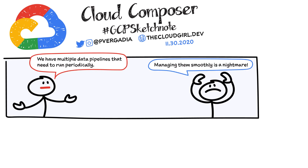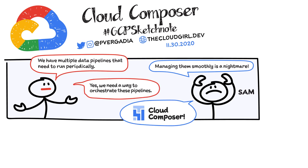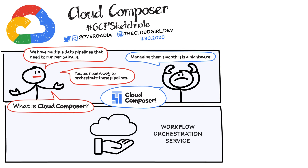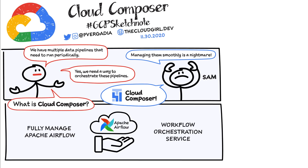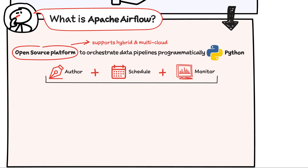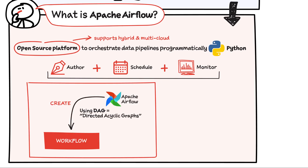Erin and Sam are part of a growing data science team with multiple data pipelines, and managing them is a nightmare. So they are looking at Cloud Composer, which is a fully managed workflow orchestration service based on Apache Airflow, which is an open source platform to orchestrate data pipelines programmatically.